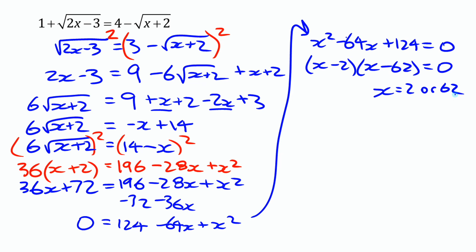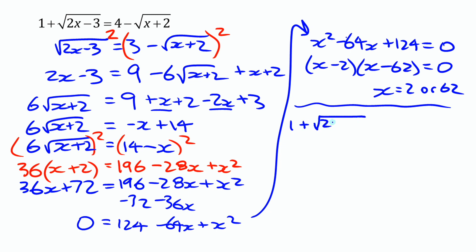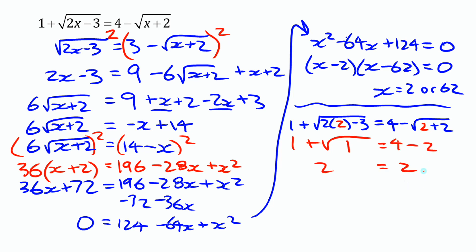Before declaring those our final solutions, we need to check both in the original equation. Substituting x equals 2: on the left side we get 1 plus square root of 4 minus 3, which is 1 plus square root of 1, which is 1 plus 1, equals 2. On the right side we have 4 minus 2, which is also 2. That works.